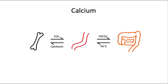To better understand these concepts, here is an equilibrium diagram to simplify the movement of calcium throughout the body. It's a bit oversimplified, but it helps you see the big picture. We have the bones, blood, and intestines, along with PTH, calcitonin (secreted by the thyroid gland, as briefly mentioned in the last video), FGF-23 (fibroblast growth factor 23), and vitamin D.